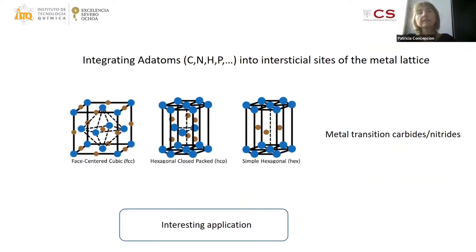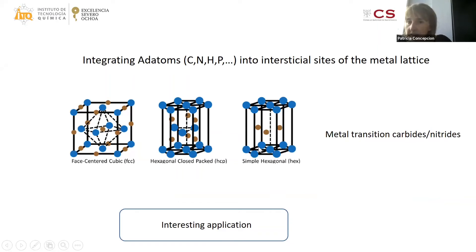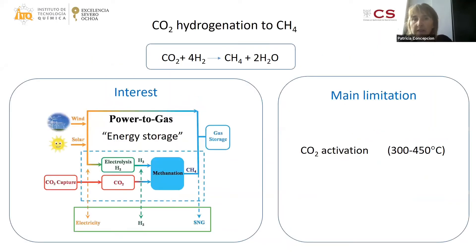Finally, another way to modify the activity of metal nanoparticles is integrating atoms like carbon, nitrogen, hydrogen, or phosphorus into interstitial sites of the metal lattice — as in the case of transition metal carbides and nitrides. A very interesting application of this type of materials has been observed in our group in the CO2 hydrogenation to methane.